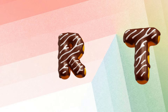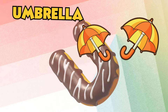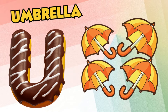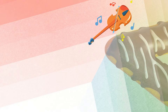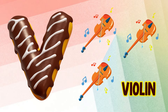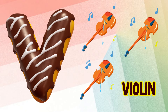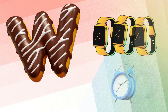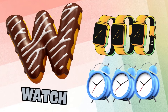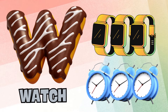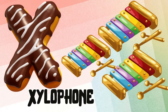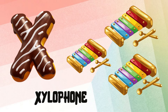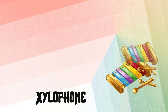U is for umbrella, u-u-umbrella. V is for violin, v-v-violin. W is for watch, w-w-watch. X is for xylophone, x-x-xylophone.